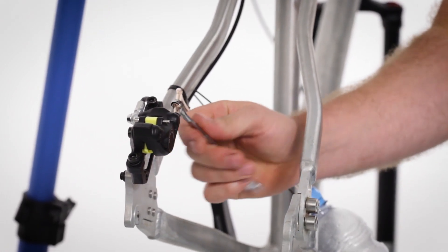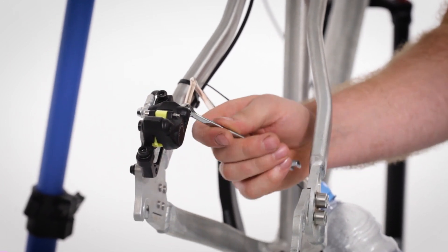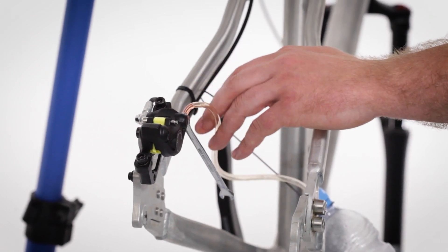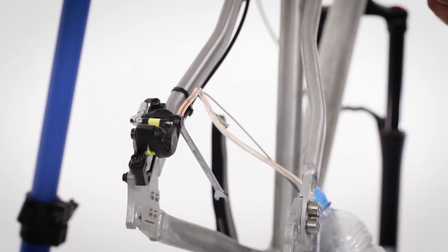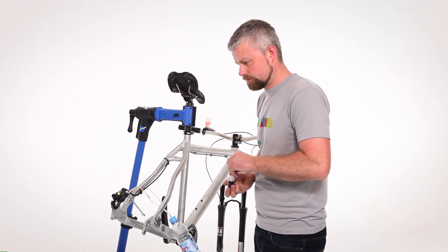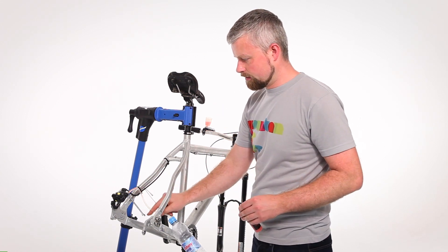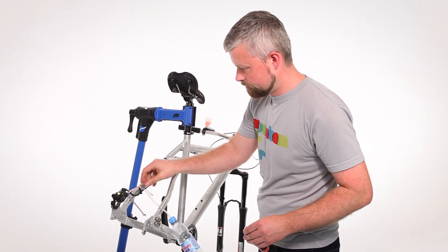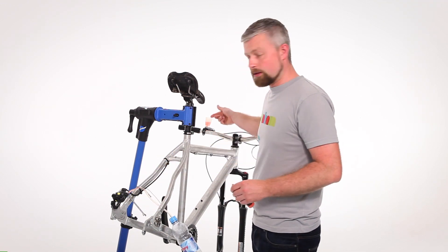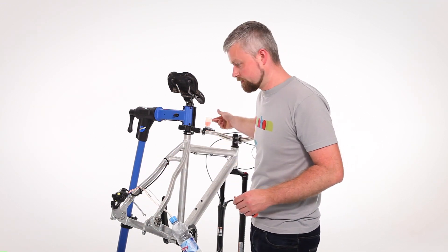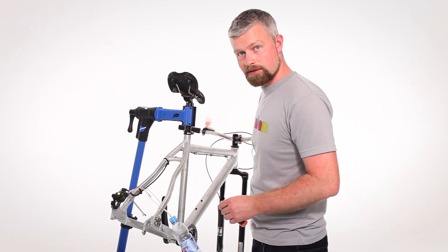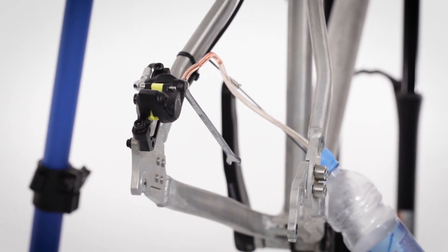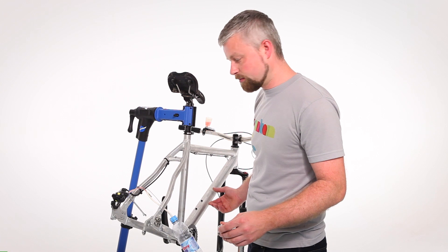Now when we open the bleed nipple, gravity should send the fluid from the lever and back down through the caliper and into our bottle. Make sure you keep topping up the funnel, otherwise you'll suck air into the lever. That's coming through, and basically keep doing that until you don't see any bubbles.